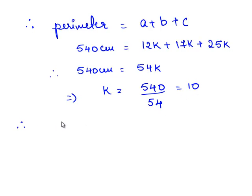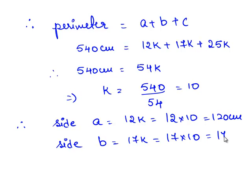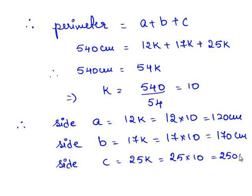Therefore, the actual lengths of the sides of the triangle are: side A is equal to 12K, which is 12 times 10, that is 120 cm. Side B is equal to 17K, which is 17 times 10, that is 170 cm. Side C is equal to 25K, which is 25 times 10, that is 250 cm.